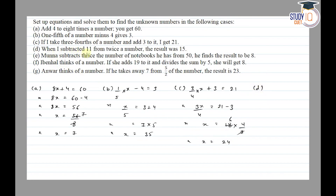Part d: when I subtracted 11 from twice a number, the result was 15. The required number is x. Twice a number means 2x minus 11 is equal to 15. Shifting 11 to the other side, the sign changes: 2x is equal to 15 plus 11, which is equal to 26.